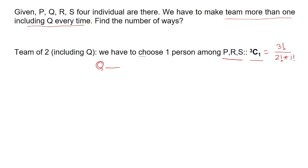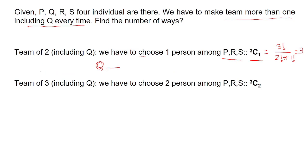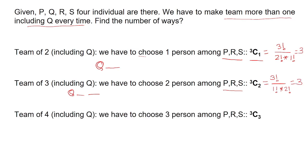Condition 2: we can form a team of 3 including Q. So Q will always be there and we would have two more places to fill the team. We can choose two people among available three: P, R, S. So the number of ways would be 3C2, and it would be 3 factorial divided by 1 factorial multiplied by 2 factorial. This will be equal to 3.